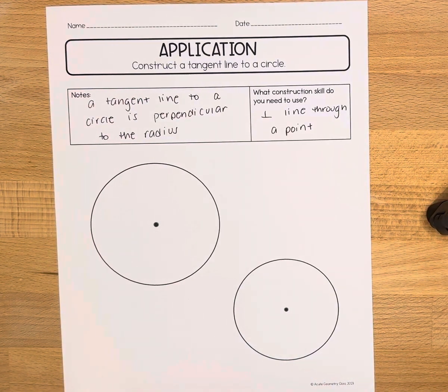In this video we'll be constructing a tangent line to a circle. A tangent line to a circle is perpendicular to the radius of the circle or to the diameter. For this we'll be doing the perpendicular line through a point construction and just applying it to this new situation.